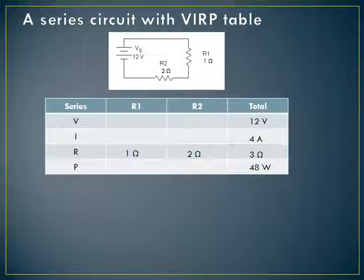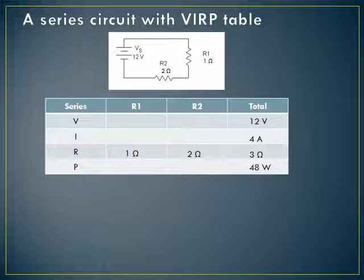Now we've got one column done, but we still need two values in the other columns. In series circuits, the current is the same through each resistor because there's only one path for those electrons to take. However many electrons are coming out of the battery — 4 amps — must also be going through the first resistor and through the second resistor. So in a series circuit, the current has to be the same everywhere. Now with two values per column, we use I equals V over R: R1 gets 4 volts and R2 gets 8 volts.